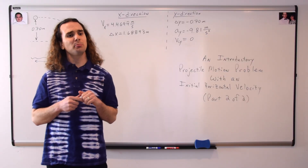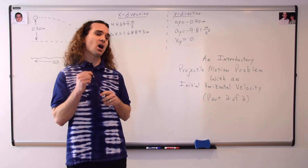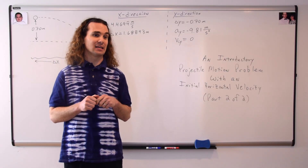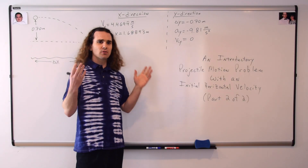Billy, could you please help us find the final velocity of the ball right before it lands in the bucket? We can use the kinematic equation — velocity final in the y-direction squared equals velocity initial in the y-direction squared... Are you talking about the x-direction or the y-direction?